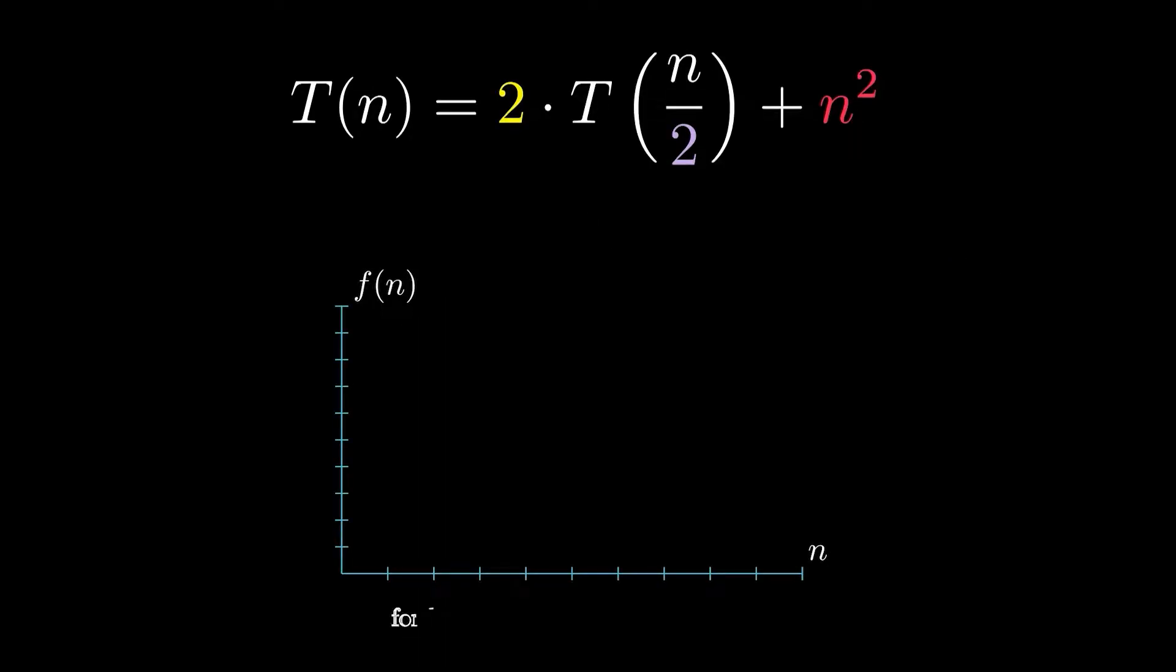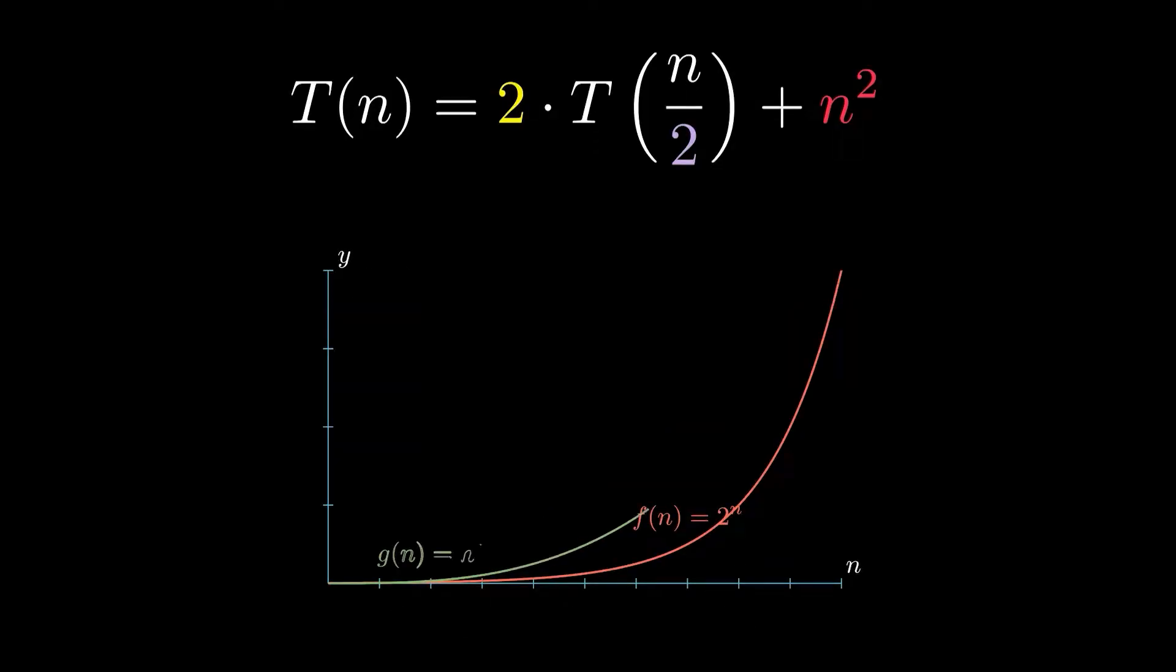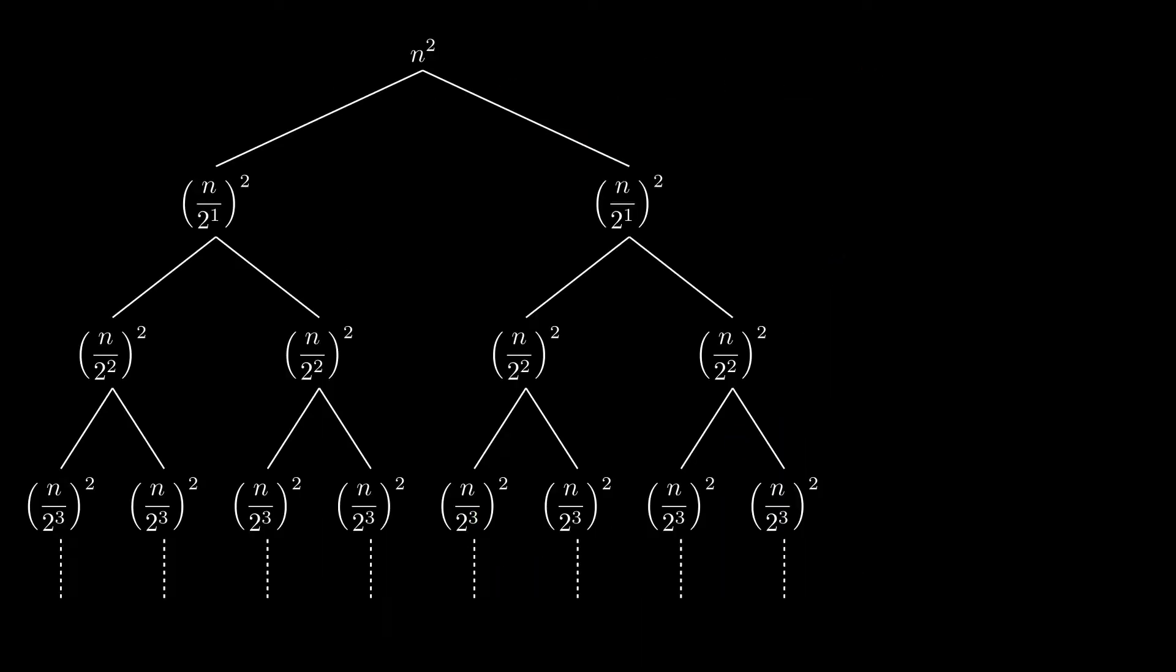A function is said to be asymptotically positive if, for sufficiently large values of the input, the function becomes positive and stays positive as the input continues to increase without bound. Examples of such functions could be n-square, n-cube, or exponential functions.